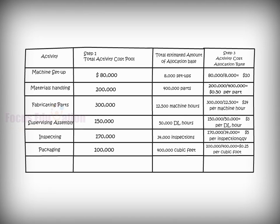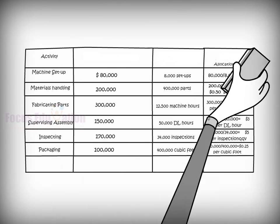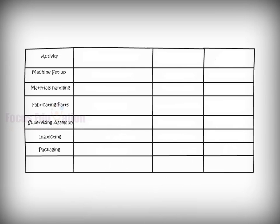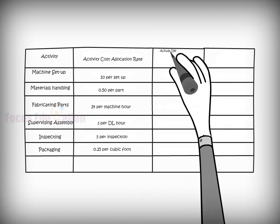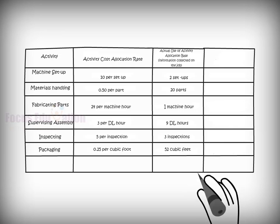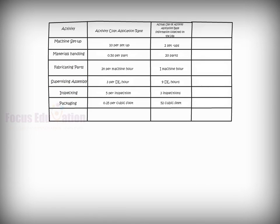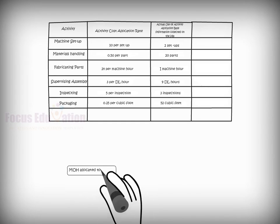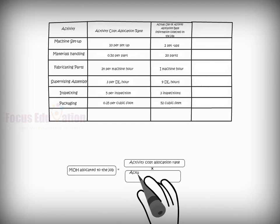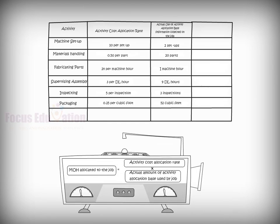Because these rates are estimated beforehand, the company uses them to allocate manufacturing overhead to specific jobs during the year. In the fourth and final step, Life Fitness allocates some manufacturing overhead from each activity to the individual jobs that use the activities.